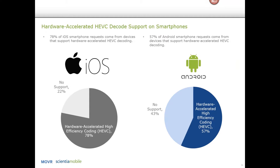Diving into the actual devices that are out there, we paint a picture of the readiness of the audience to use HEVC decoding available on their smartphones. You might not want to choose the HEVC codec unless devices have that decoding capability. On Apple iOS phones, they started to adopt HEVC in their chipsets a few generations ago, and now 78% of the devices support hardware-accelerated HEVC decoding. On the Android side, it's a little different — about 57% actually support HEVC, while 43% do not.